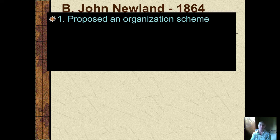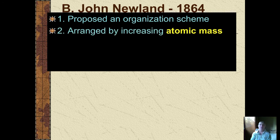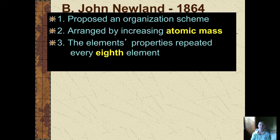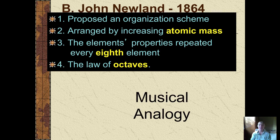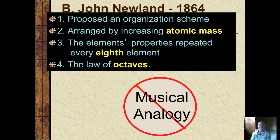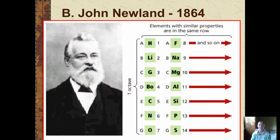John Newlands in 1864 proposed an organizational scheme arranged by lining up the elements in order of increasing atomic mass. What he noticed is that after about every eighth element or so, the patterns of properties of the elements began to repeat. He called this the law of octaves — though of course that would not be analogous to musical octaves. So let's take a look at John Newland's chart.